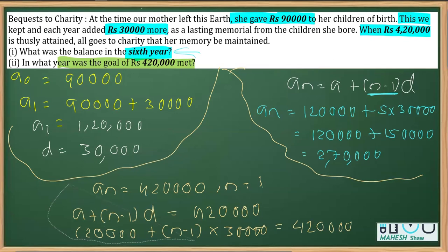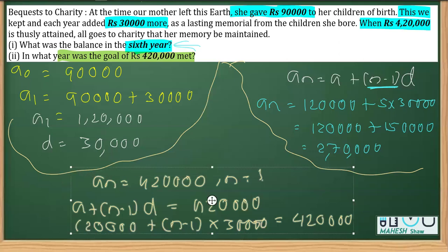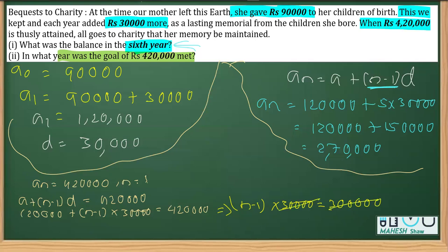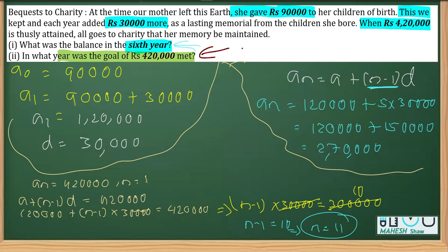Now simplifying to find n: transposing 1,20,000 to the other side gives (n−1) × 30,000 = 4,20,000 − 1,20,000 = 3,00,000. Dividing both sides by 30,000 gives n−1 = 10, which implies n = 11. So the answer for the second part is that the goal of ₹4,20,000 is attained in the 11th year.